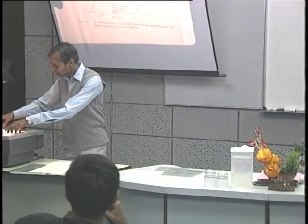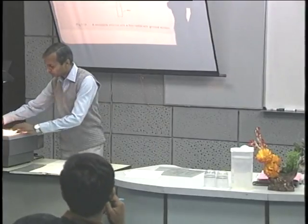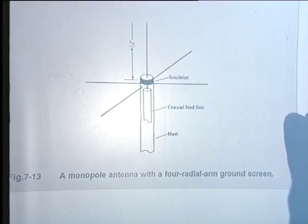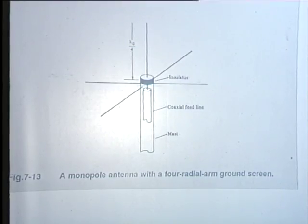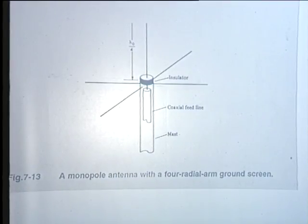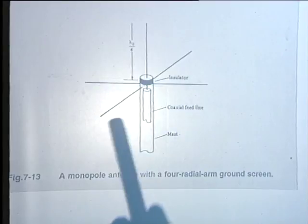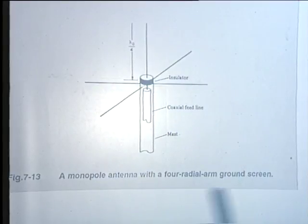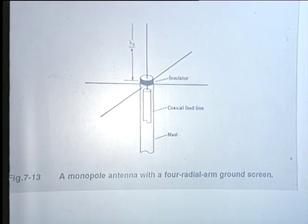Similarly, as a base station antenna in the land mobile communication, where the antenna may be mounted on top of a high building, since the earth is not available for mounting, one may simulate the effect of a conducting plane with the help of four radial wires, which act as a ground screen fairly effectively.